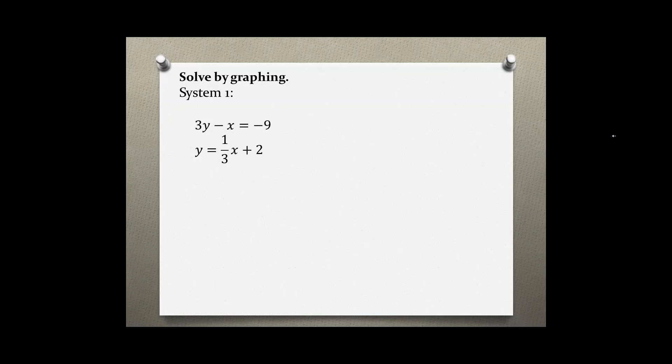Solve by graphing. System 1: 3y minus x equals negative 9 and y equals 1 third x plus 2.